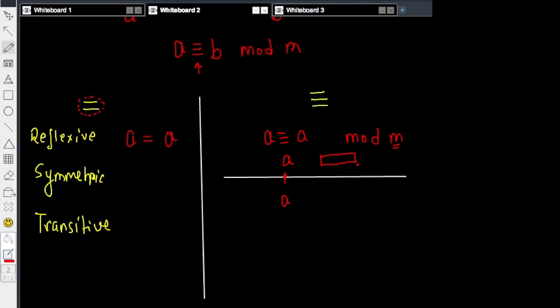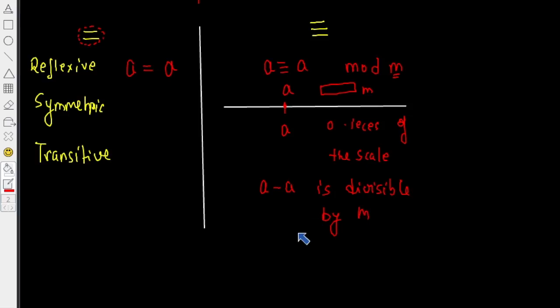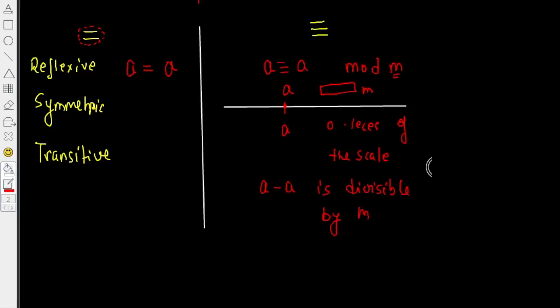the distance between A and A can be covered by this scale M. How? Well, we will use zero pieces of the scale. So this is sort of vacuously true. In fact, in a more algebraic way, the question really boils down to whether A minus A is divisible by M, and it indeed is because A minus A is just zero and zero is definitely divisible by any number, so it is divisible by M.